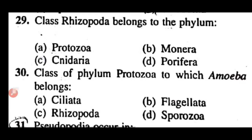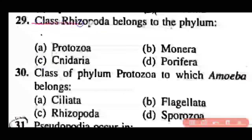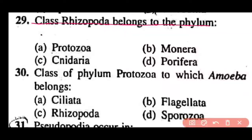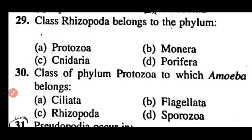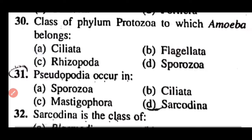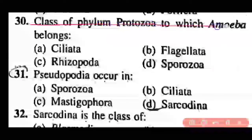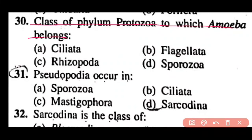Question 29: The class Rhizopoda belongs to phylum Protozoa, Monera, Nigeria, or Porifera? Correct answer is option A. The class Rhizopoda belongs to Protozoa and includes amoebas. Question 30: The class of phylum Protozoa to which Amoeba belongs is Ciliata, Flagellata, Rhizopoda, or Sporozoa? Correct answer is option C. Rhizopoda class contains Amoeba.